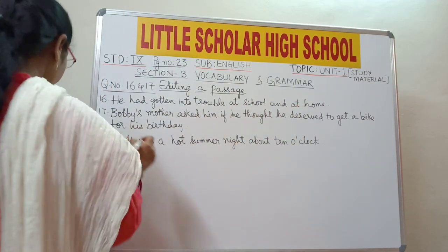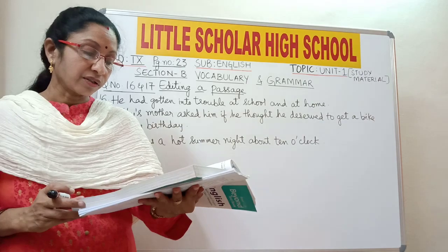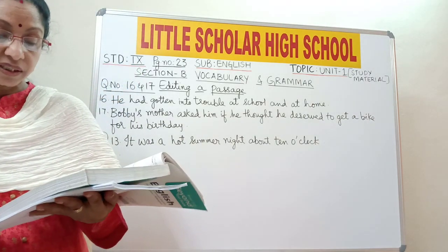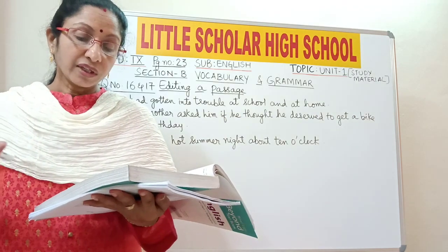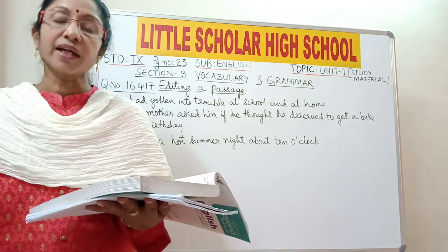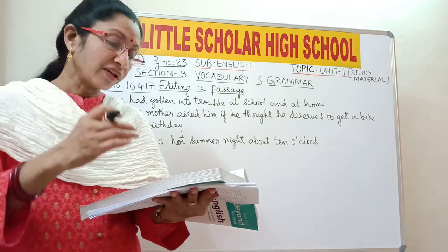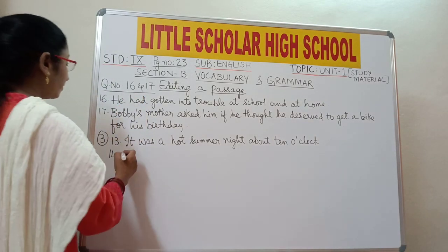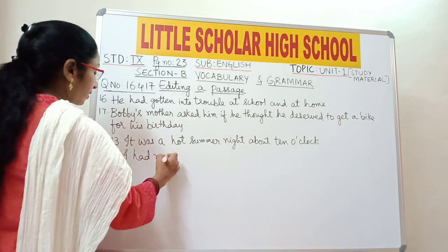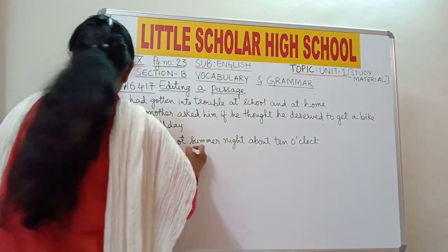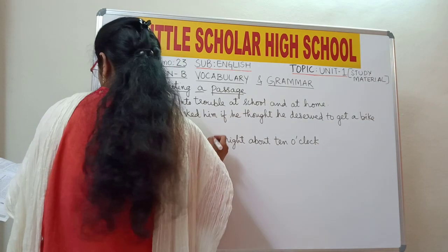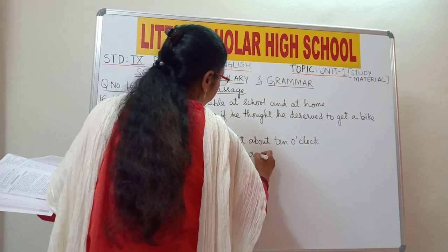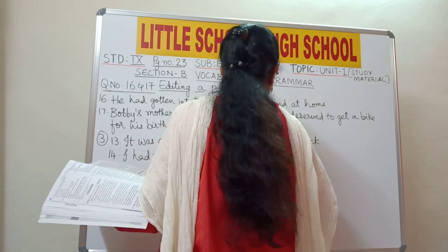Question number 14: 'I had my meal in the restaurant and returned to my room.' The restaurant is a place considered to be small, so we have to use the preposition 'at' in place of 'in,' just like we did for school and home. Write: 'I had my meal at the restaurant and returned to my room.'